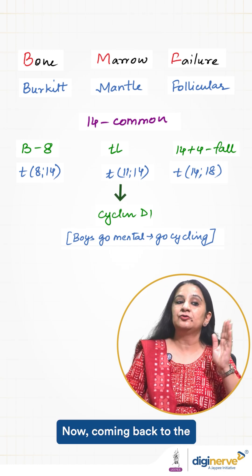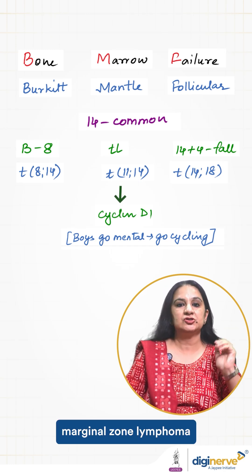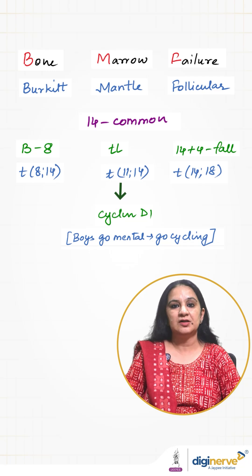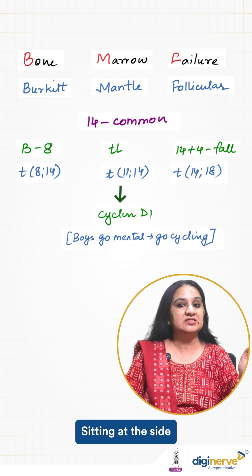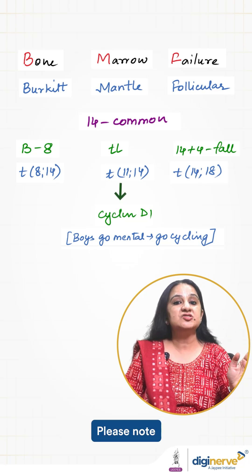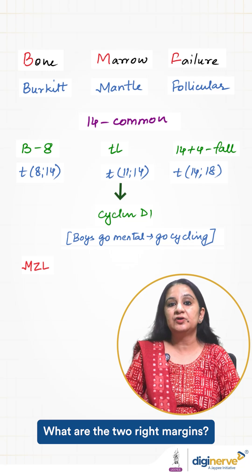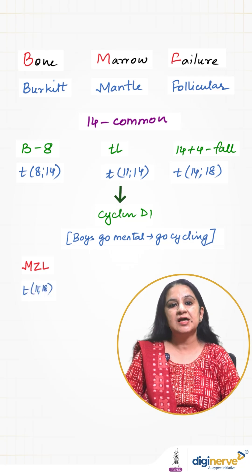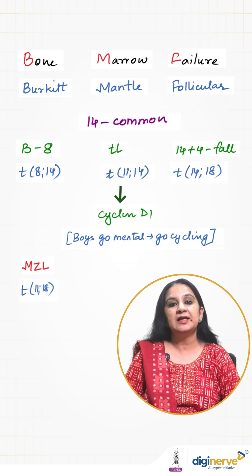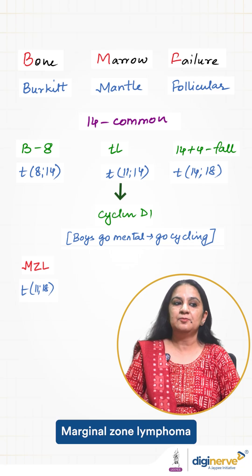Now coming back to Marginal Zone Lymphoma, sitting at the side. Please note, take the two right margins — what are the two right margins? 11 and 18. So, translocation t(11;18) for Marginal Zone Lymphoma.